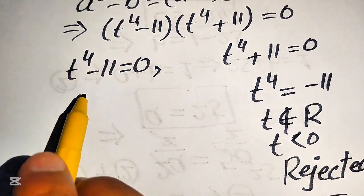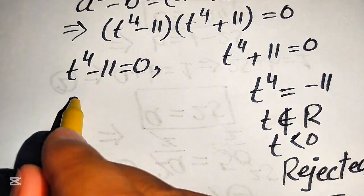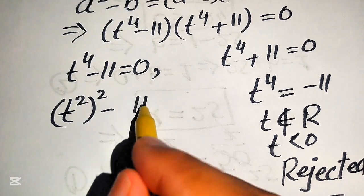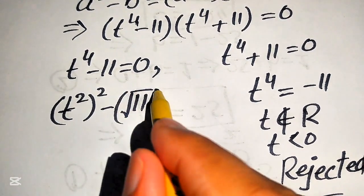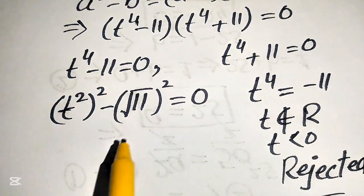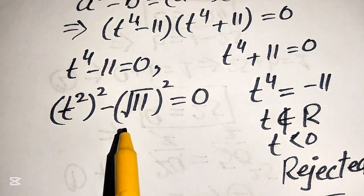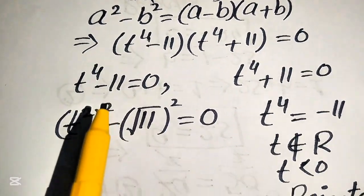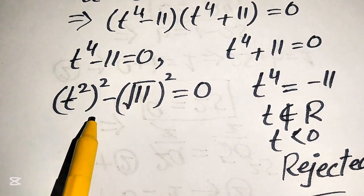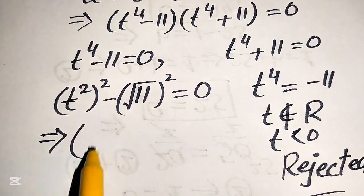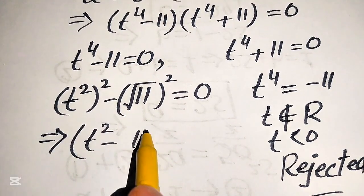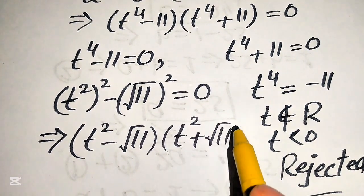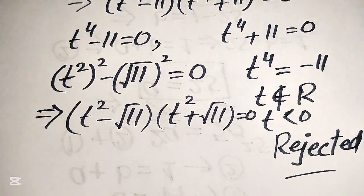Returning to the first case, we rewrite t to the power of 4 as t squared, whole squared, and we write 11 as the square root of 11, whole squared. This gives (t squared) squared minus (√11) squared equals 0. We can apply the difference of squares formula again, breaking this as (t squared minus √11)(t squared plus √11) equals 0.